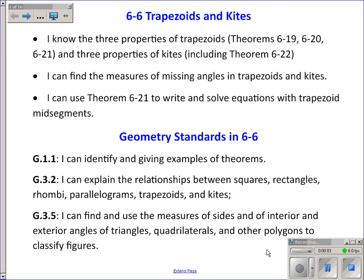Section 6-6 is about trapezoids and kites. By the end of this section you should know three properties of trapezoids — two about isosceles trapezoids and one about any kind of trapezoid — and also three properties of kites. You should be able to find the measures of missing angles in trapezoids and kites, and use Theorem 6-21 to write and solve equations involving trapezoid midsegments.